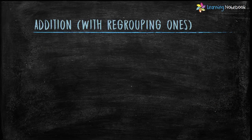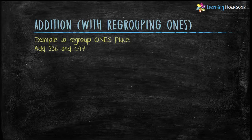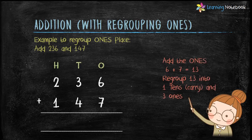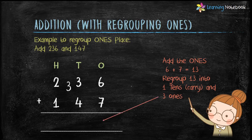Now let's learn addition with regrouping at the ones place. The example is to add 236 and 147. Write the numbers in column form. Start adding the digits at the ones place: 6 plus 7 equals 13. Since 13 is a 2-digit number, we regroup 13 into 1 ten (which acts as a carry) and 3 ones. We write 3 in the ones column and 1 acts as a carry to the tens place.